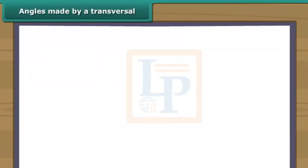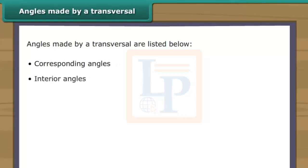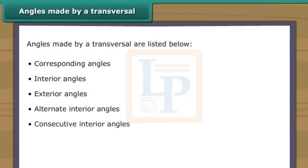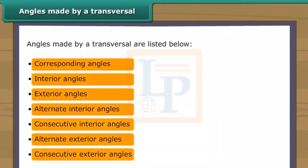Angles made by a transversal. Transversals form seven types of angles. They are described as corresponding angles, interior angles, exterior angles, alternate interior angles, consecutive interior angles, alternate exterior angles, and consecutive exterior angles. Click each button to know more about above mentioned angles.